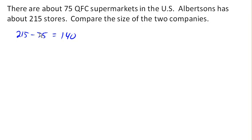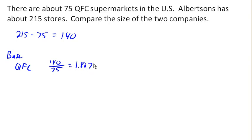There are a lot of different relative differences we could calculate, depending upon what we use as the base. If we use QFC as the base, then we get 140 out of 75 is 1.867, which would tell us that Albertsons is 186.7% bigger than QFC.